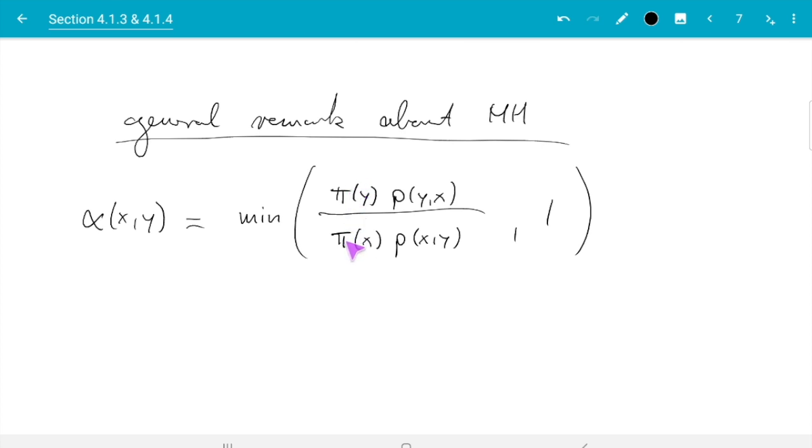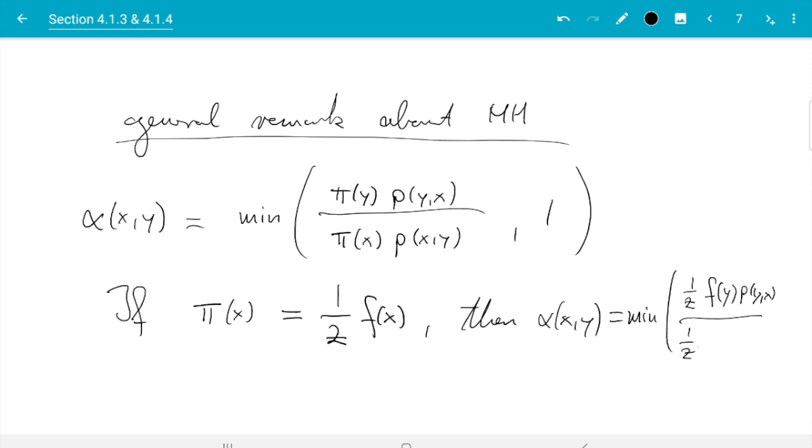It's only used in the acceptance probability. The consequence is that if we know π only up to a multiplicative constant—for example, if π(x) is 1 over z times f(x) and we don't know the normalizing constant z—then that is no problem. Because α is the minimum of 1 over z times f(y) times p(y,x) and 1 over z times f(x) times p(x,y) and 1, whatever the normalizing constant is, we don't need to bother with it because it cancels.